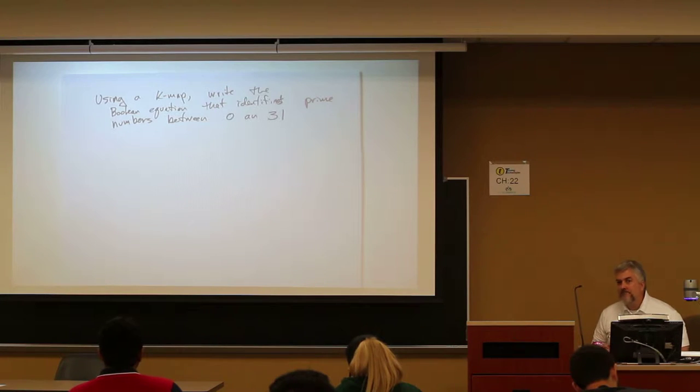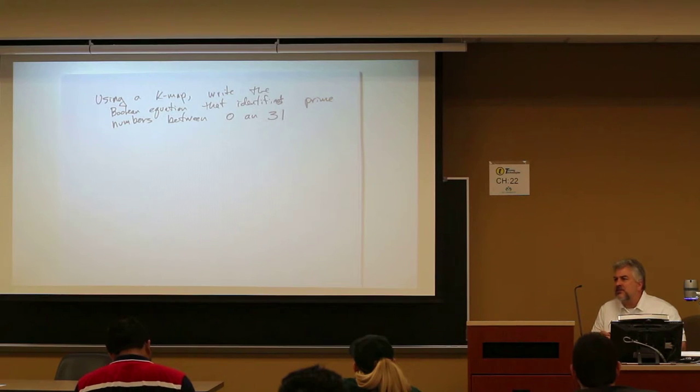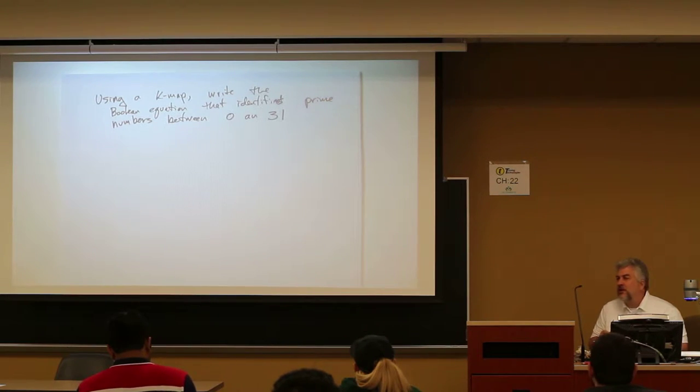Okay, so first of all, if I'm going to do this with a K-map and my inputs are going to be the digital binary digits needed to represent 0 to 32, how many binary digits is this? Five? So 32 is 2 to the 5th, right?